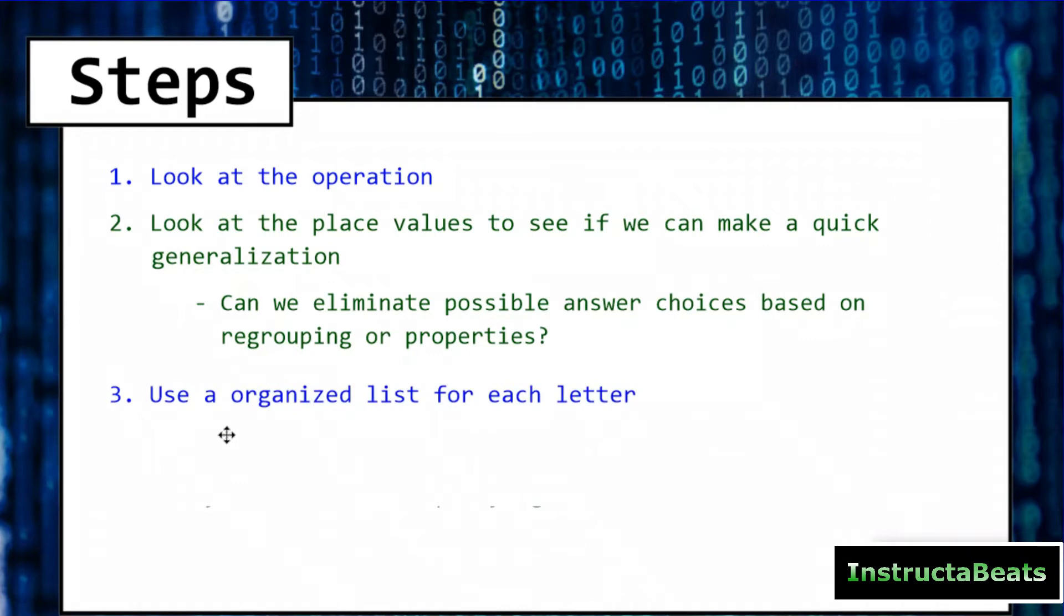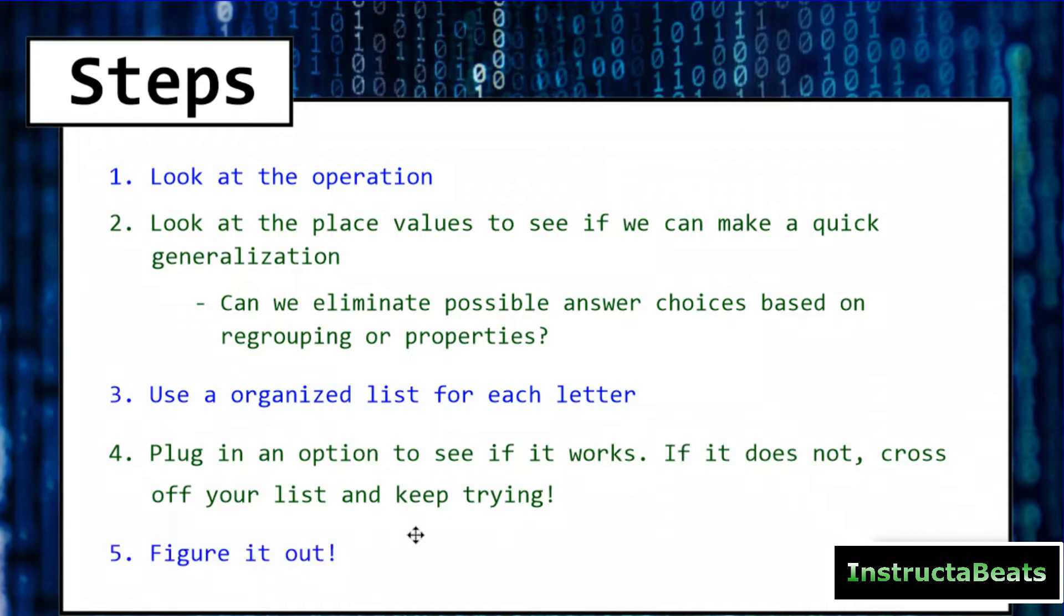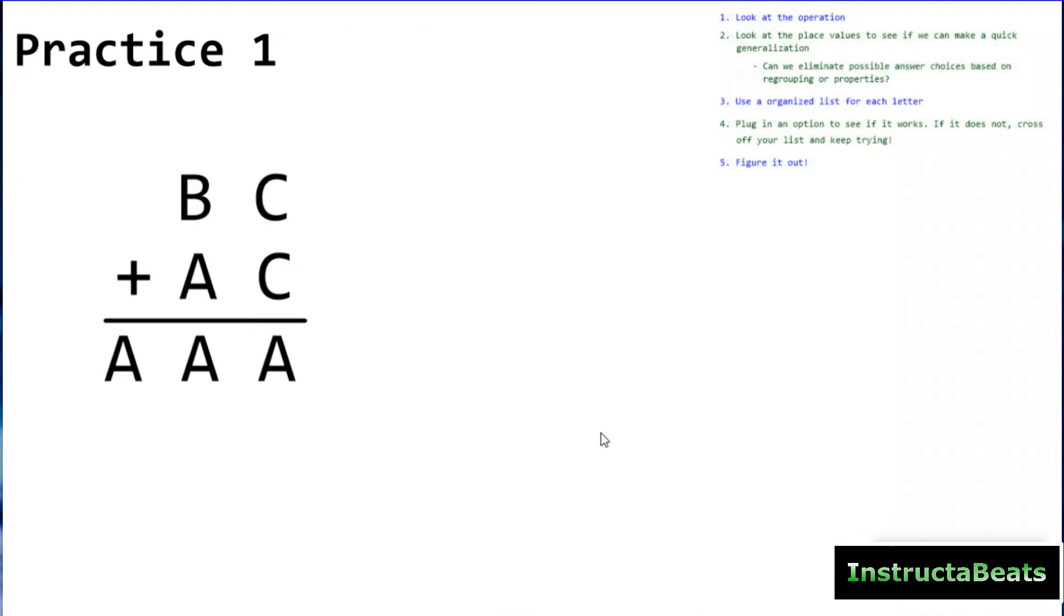Can we eliminate possible answer choices based on regrouping or the properties of our operation? So, we have to know what operation we're doing to understand the properties of the operation and what that means to regroup. Step number 3, we're going to use an organized list for each letter. After we eliminate our possible answer choices, we'll list out the rest of them in an organized list. Then step number 4, we're going to plug in an option to see if it works. We might be guessing and checking, and that is totally okay. It's a great problem-solving strategy. If that option does not work, we cross it off our list and keep trying. And step number 5, figure it out. We've got to figure it out. We've got to do whatever we need to do to solve the problem.